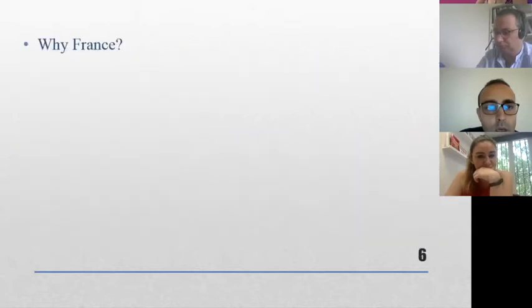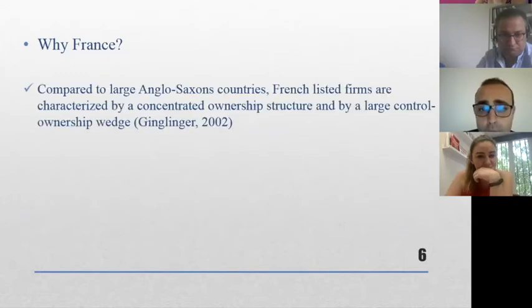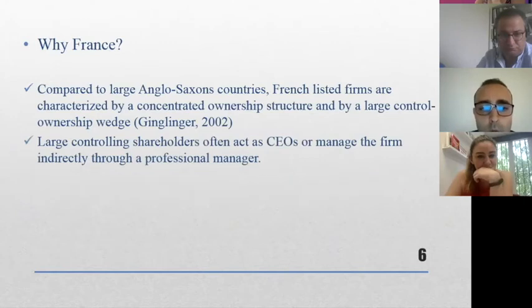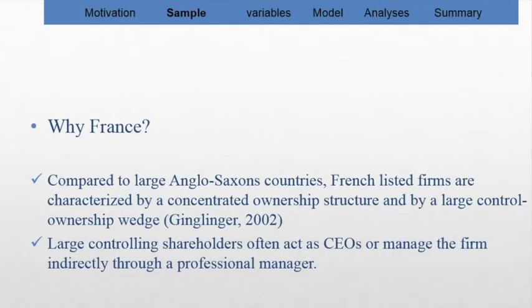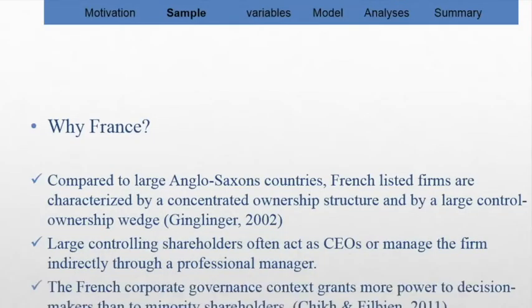So now why do we focus on French context? First, compared to large Anglo-Saxon countries like United States and UK, French listed firms are characterized by concentrated ownership structure and by large control ownership wedge or control ownership excess. Second, large control shareholders often act as chief executive officer or manage the firm. Third, the French corporate governance context grants more power to decision makers than to minority shareholders like in USA. And finally, large proportion of French listed firms have multi-large shareholders with substantial voting rights.